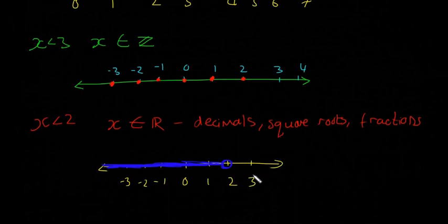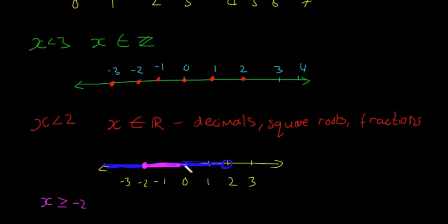And then the last example we'll just do quickly. For example, if they wanted you to write x is greater than or equal to minus 2. In this case, you do a solid dot on minus 2, and then you colour everything up, because everything is greater than minus 2. So just the difference between the open dot and the solid dot.